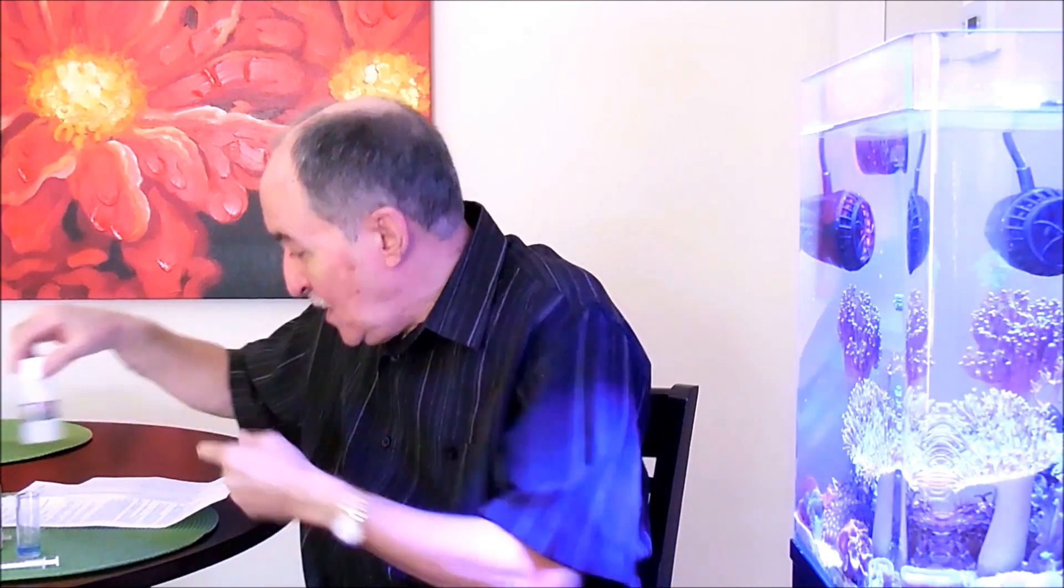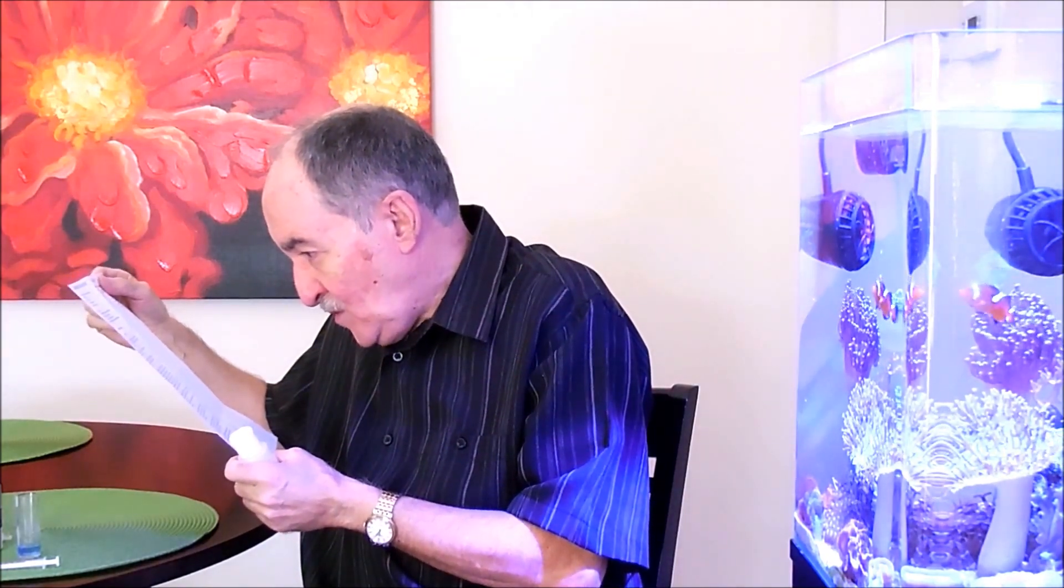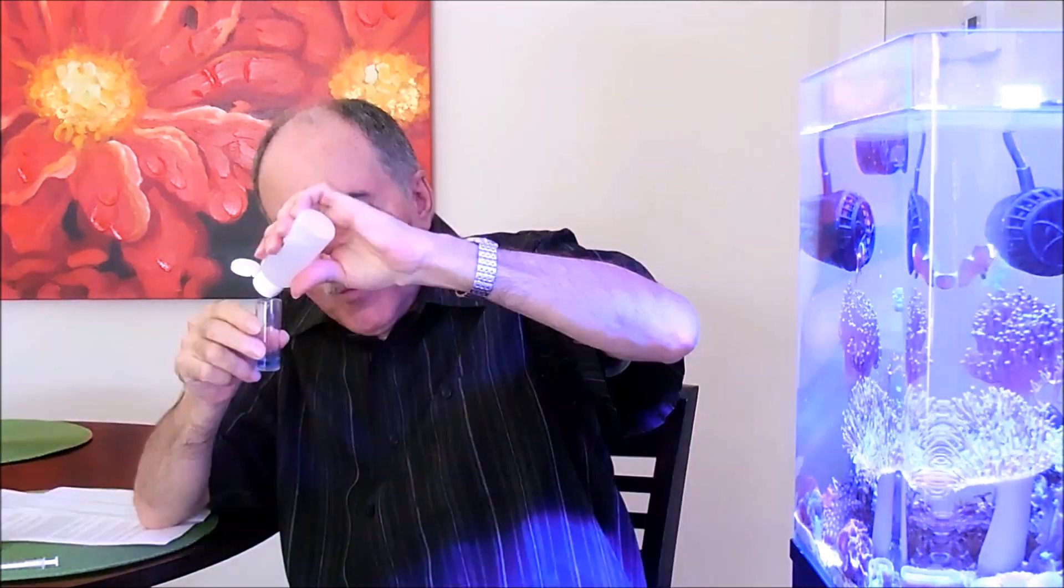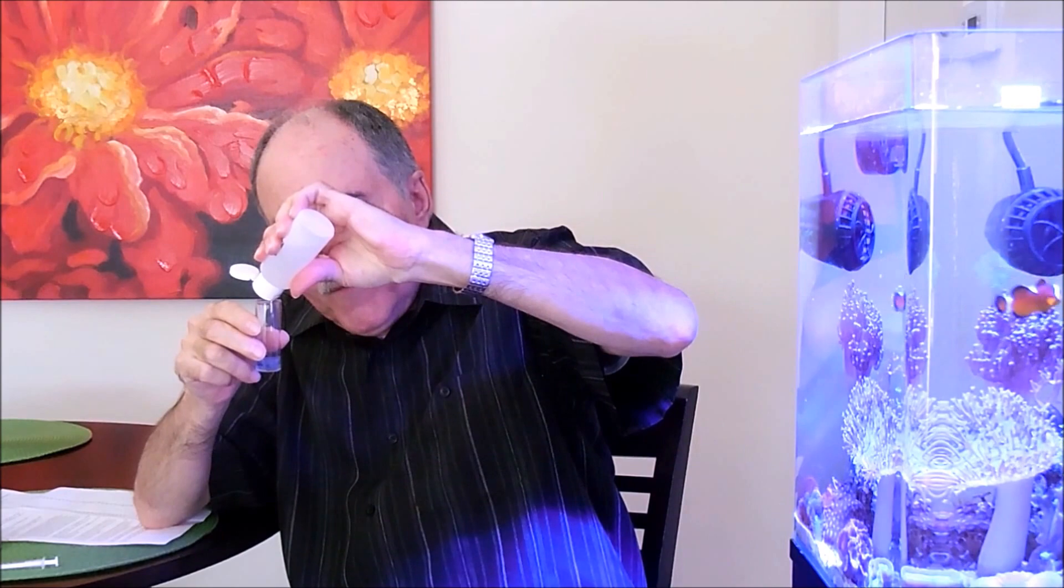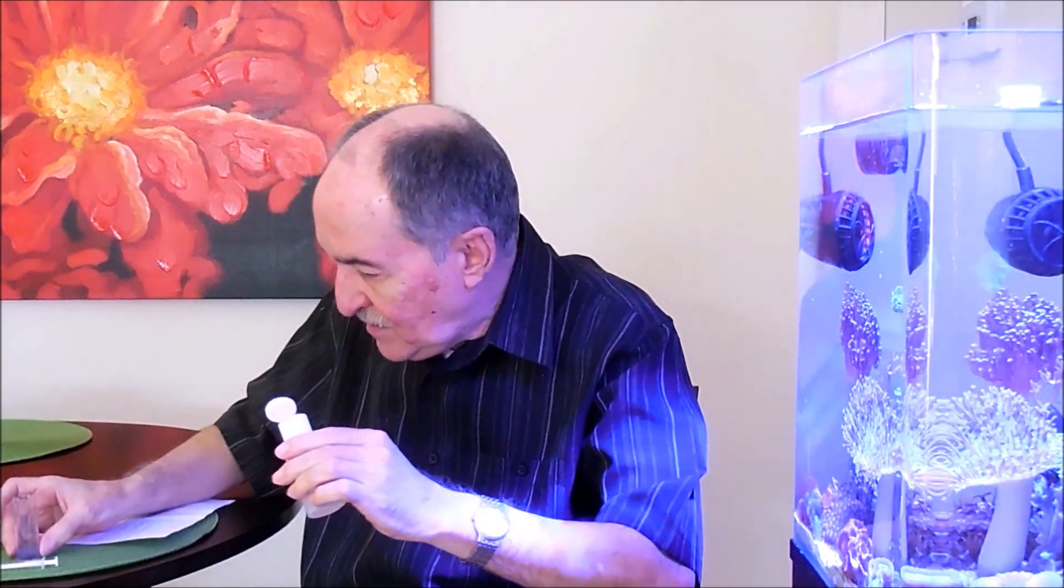Step 3, it says to add 8 drops of Cal 2. And once you add the 8 drops of Cal 2, you have to swirl it for 10 seconds, not shake. Let's put this down here.